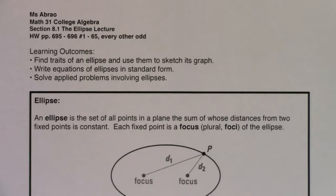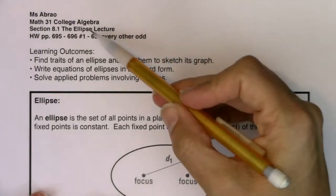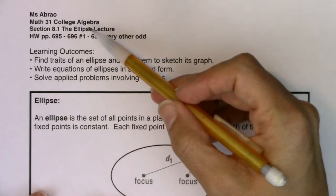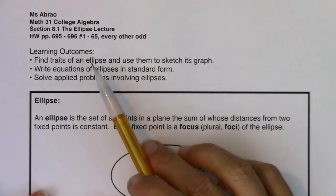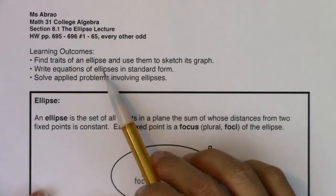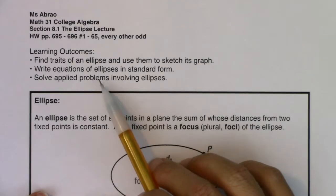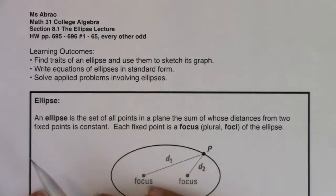Hey Mat31, welcome to section 8.1. This is when we're going to talk about the conic section known as the ellipse. We're going to find traits of an ellipse and use them to sketch its graph. We'll write equations of ellipses in standard form, and then we'll spend our very last example solving an applied problem — which is code for word problem — involving ellipses.